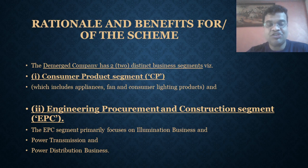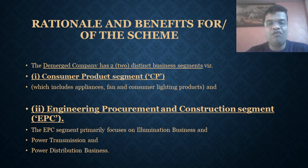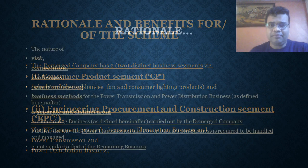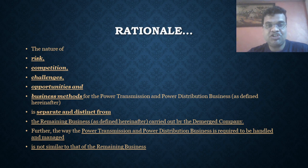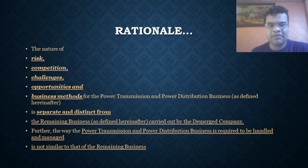The rationale behind this scheme of arrangement is that Bajaj has two separate divisions that are completely different from each other, and therefore it would like to focus on both companies separately. The risk, competition, challenges, opportunities, and business methods of the EPC segment are completely different from the existing Bajaj Electricals, which deals with consumer products such as fans, appliances, and lighting. Since the risks and opportunities differ, the company would like to focus on them separately.